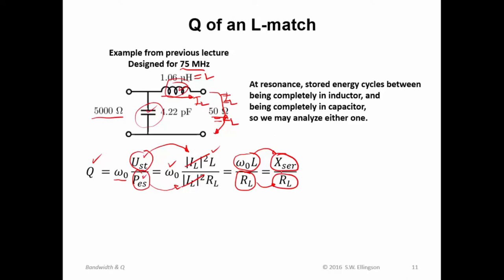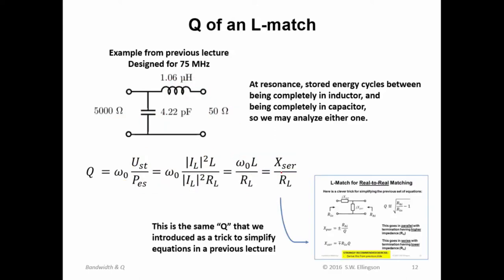Now, why is that interesting? That's the exact same value that we got for this parameter Q in the previous lecture, where we invoked this idea. Q was defined as the square root of the ratio of the high and low impedances minus 1.